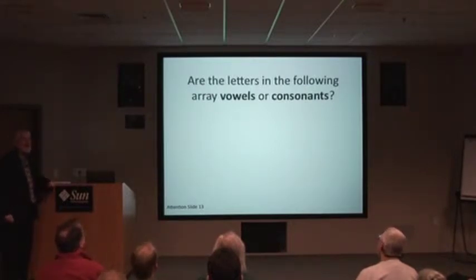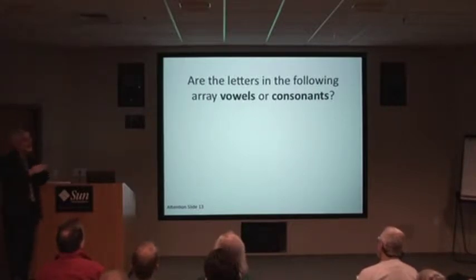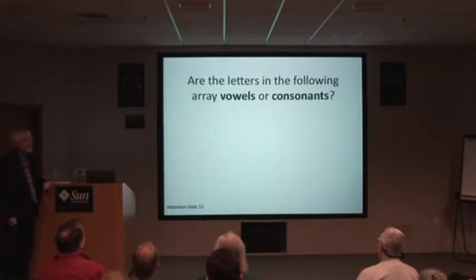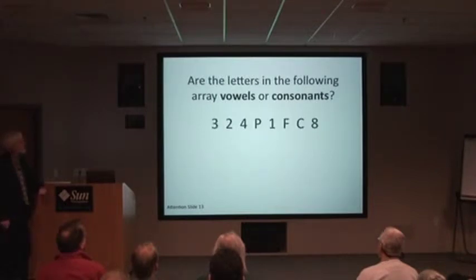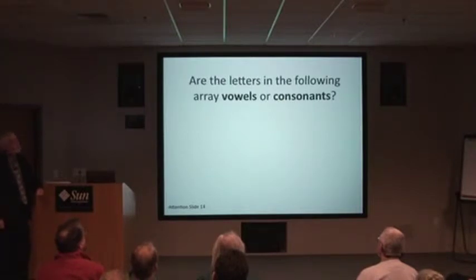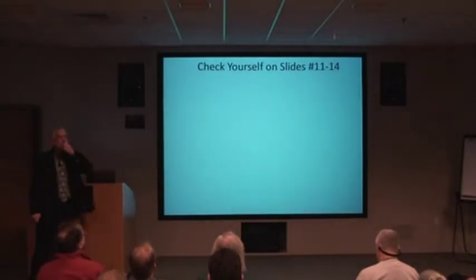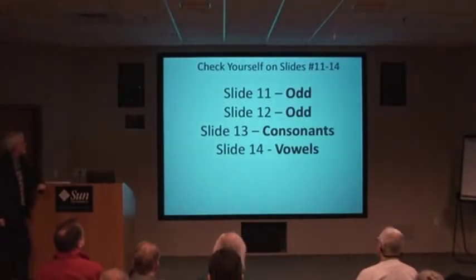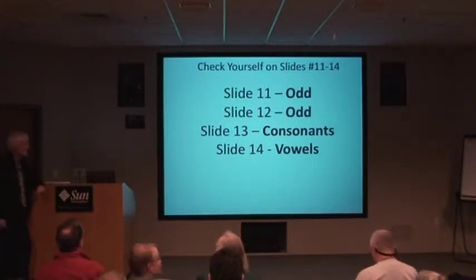Now for items 13 and 14: are the letters in the following array vowels or consonants? In a couple of my classes kids asked for clarification — I kept Y out so as not to create confusion. Answers for items 11 through 14: odd, odd, consonants, vowels. The final item 15 is also from the Stanford study — two letter arrays shown one after another, then you answer whether any letters in the second array were also in the first.